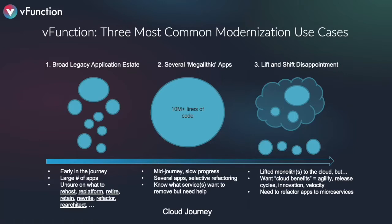The three primary use cases seen in the vFunction customer base follow the continuum of the cloud native journey. Early on, enterprises use vFunction to assess their application state and decide whether to re-host, re-platform, re-write, or re-architect. Others have very large monolithic applications with tens of millions of lines of code that they're stuck on — vFunction gives them a catalyst to analyze the application and pull out one or a set of services, scaling nicely to these large monolithic applications.